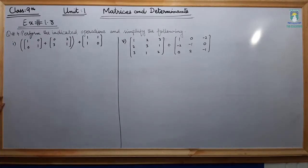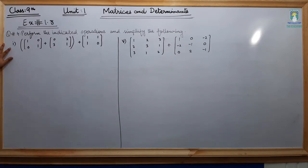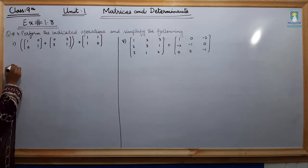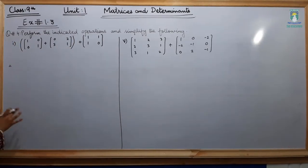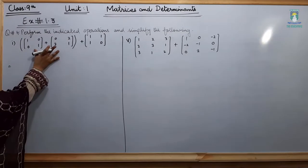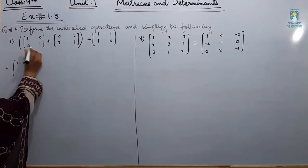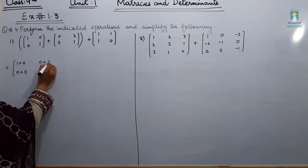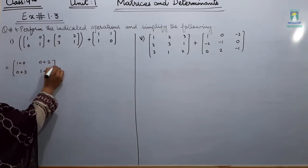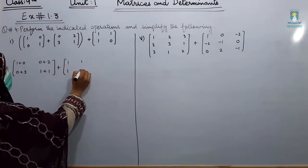Now students, we are going to solve question number 4: perform the indicated operations and simplify the following. In part number 1, look at these matrices — they are in brackets. So first we are going to solve the matrices inside the brackets. Add them: 1 plus 0, 0 plus 3, 1 plus 1, 1 plus 1. Then plus this matrix [1, 1; 1, 0].